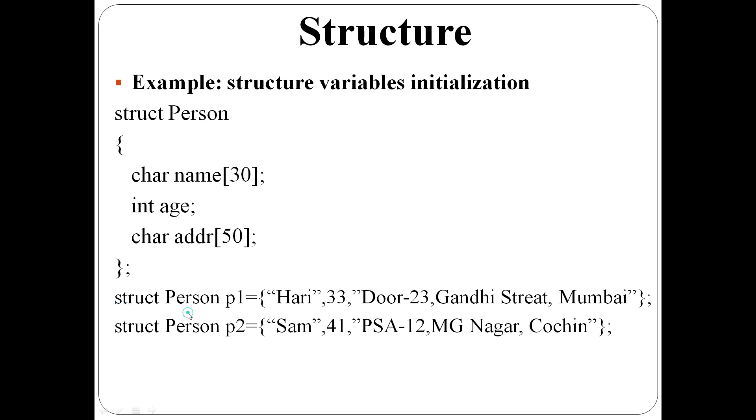This is an example of compile time initialization. Here struct person p1 equal to. First variable p1, values are assigned within curly bracket. First one Hari. Hari is the name. 33, age is set. Then this is the address. So that addr is set.